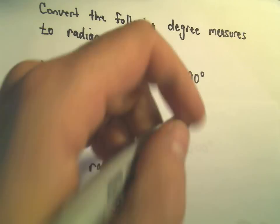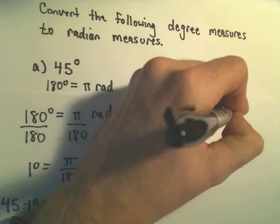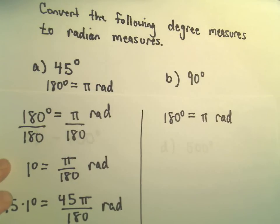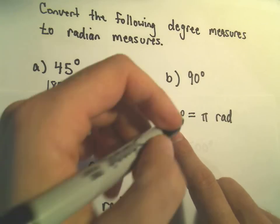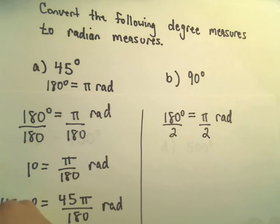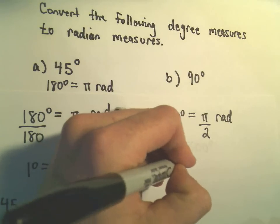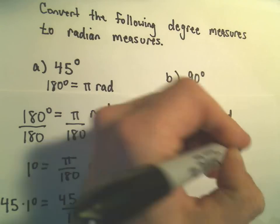Same thing with 90 degrees. I think 90 degrees is maybe a little more simple. So we said 180 degrees is equivalent to pi radians. To make the left side into 90 degrees, we could just divide by 2 and divide by 2. So we would have 90 degrees is equal to pi over 2 radians.